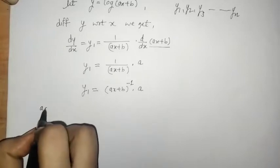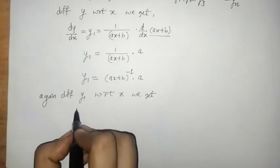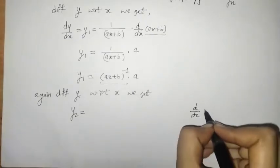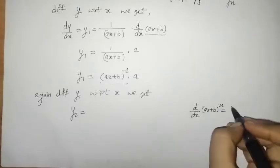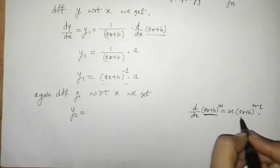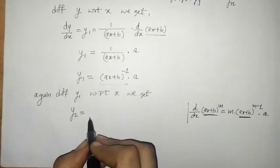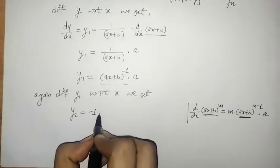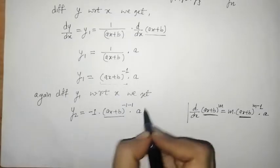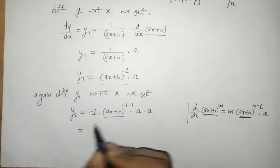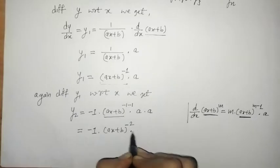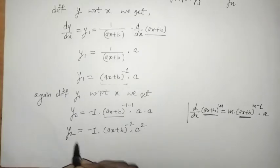Differentiating y1 with respect to x, we get the second derivative y2. We use the formula: the derivative of ax plus b raised to m is given by m into ax plus b raised to m minus 1, into a. So here we have minus 1 into ax plus b raised to minus 2 into a squared. This is the second derivative y2.